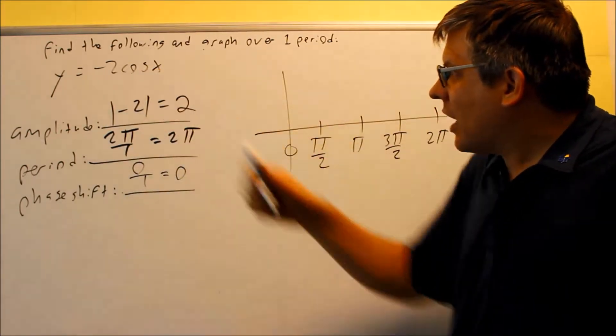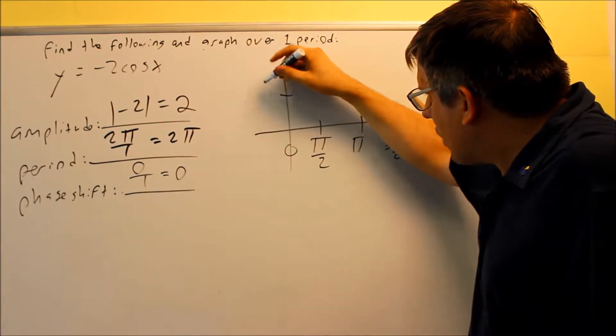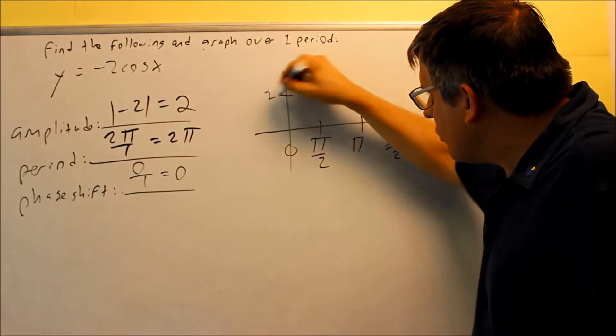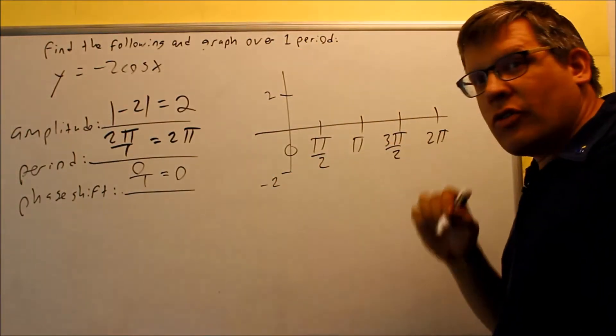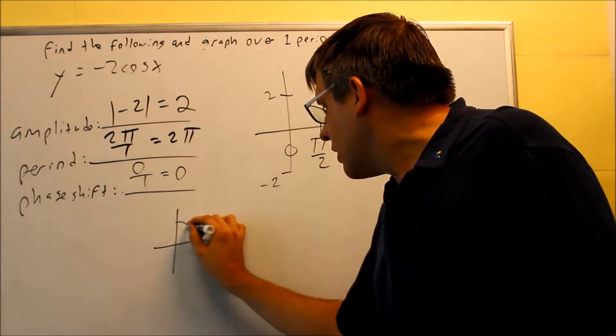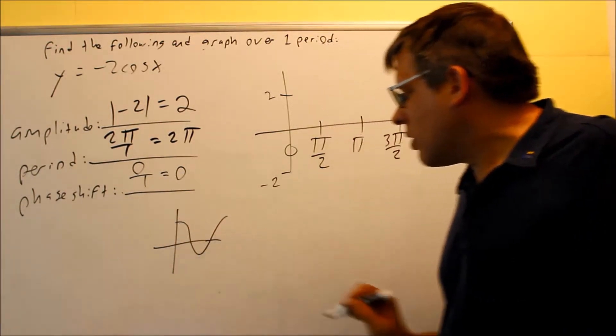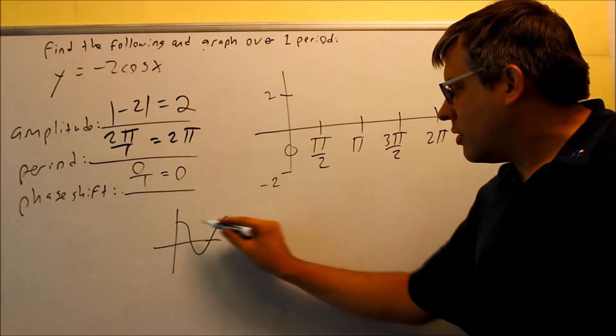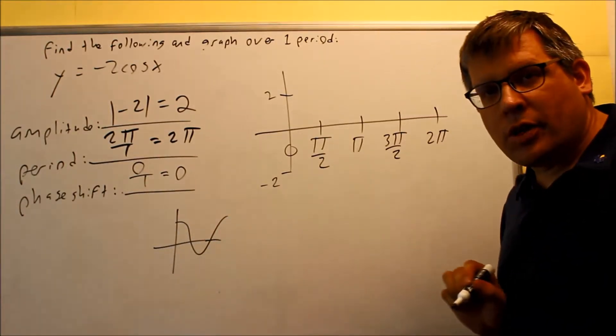And for the graph that I have, I have a negative 2 here. So I have 2 up here and I have negative 2 down below. Now if you look at the base graph we had before, the base graph for cosine kind of did something like this. The graph would drop down into a valley and then went back up again.